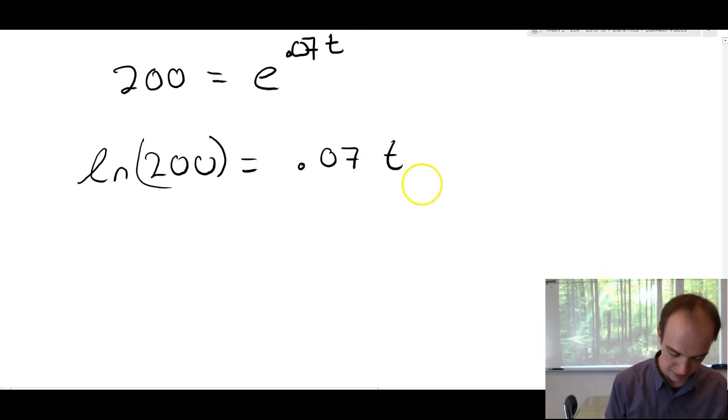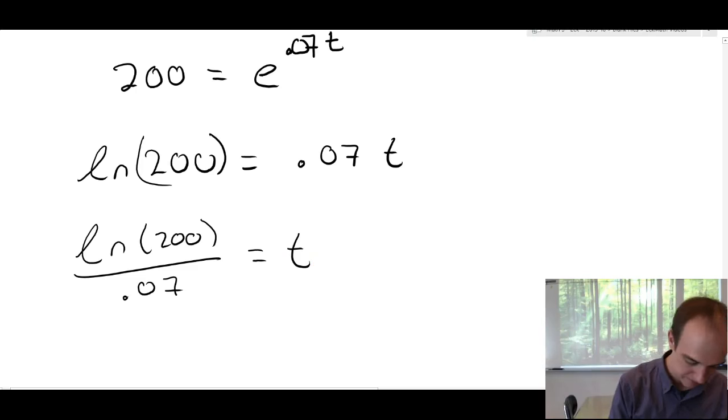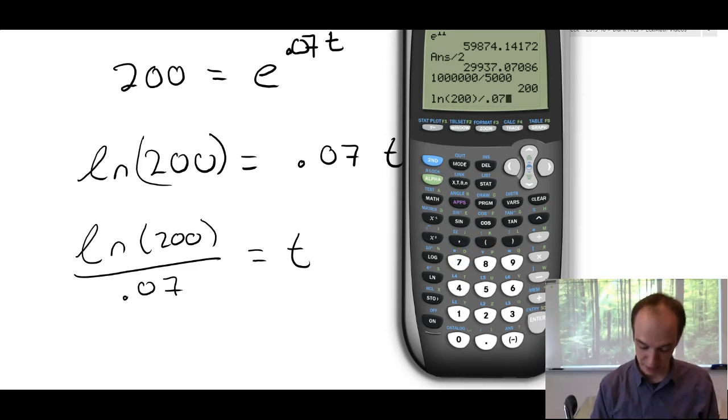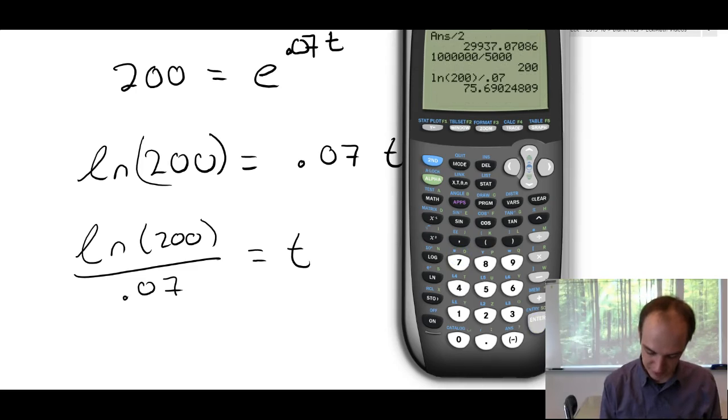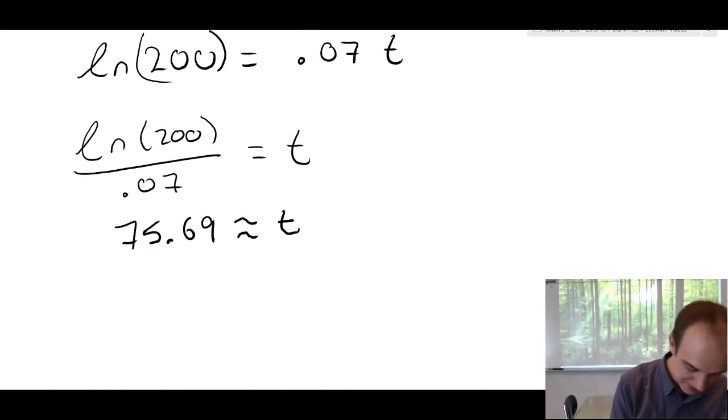My parentheses around here. And then to solve for t, we'll do natural log of 200 divided by 0.07 equals t. Be sure you close parentheses if you're putting something in your calculator like this. And be sure you get the right number of decimal places. I've seen a lot of decimal errors here. So, our answer is 75.69 approximately is equal to t. And that means that after 75.69 months, there will be a million spiders.